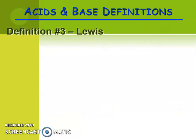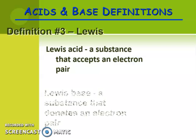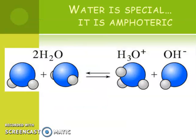The Lewis definition of acids and bases is also in your book on pages 455 and 456 — it deals with electron pairs. We are not going to be testing on that this year; we're going strictly with the Arrhenius and Brønsted-Lowry definitions of acids and bases.